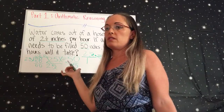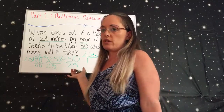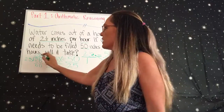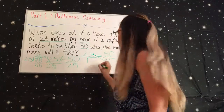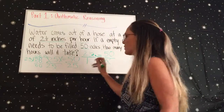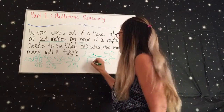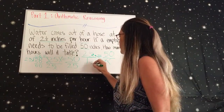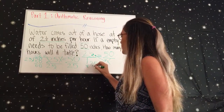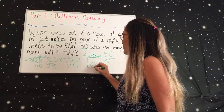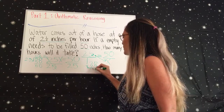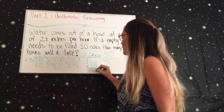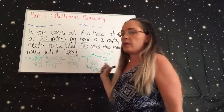Just to check your work and make sure you got it correct, do 20 times 2.5 and you get 50.